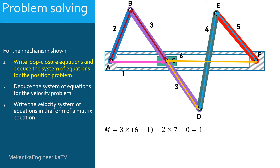The mechanism should receive 1 input. Consequently, 1 position parameter should be given in order to be able to solve the position problem. For example, 1 bar angle should be considered as given. Let theta 2, the angle of the bar AB, be the given angle.